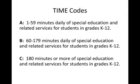Once you have calculated the average daily minutes of special education and related services, you are ready to assign the student a time code. USOE allows districts and charter schools to submit one of three time codes for each student. A is used for students receiving 1 to 59 minutes daily. B is used for students receiving 60 to 179 minutes daily. C is used for students receiving 180 minutes or more per day. For state special education add-on and self-contained funding, students with a time code of A or B are grouped into the category resource, and students with a time code of C are grouped into the category self-contained.